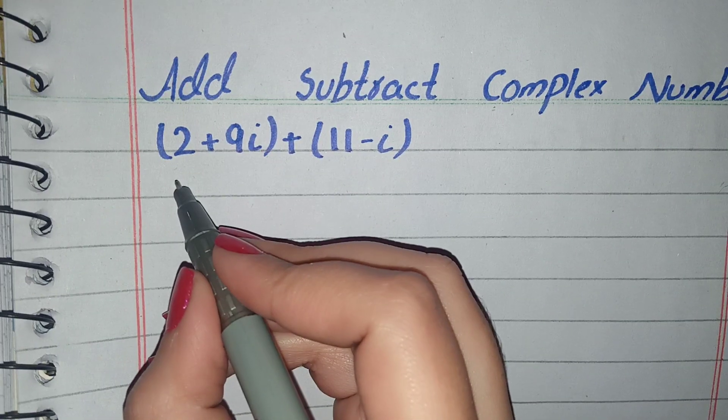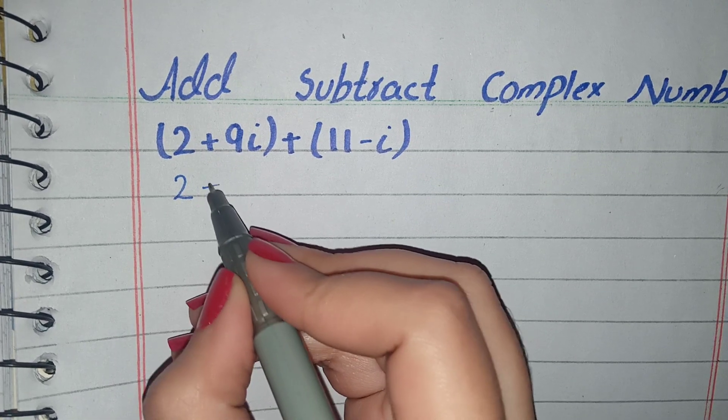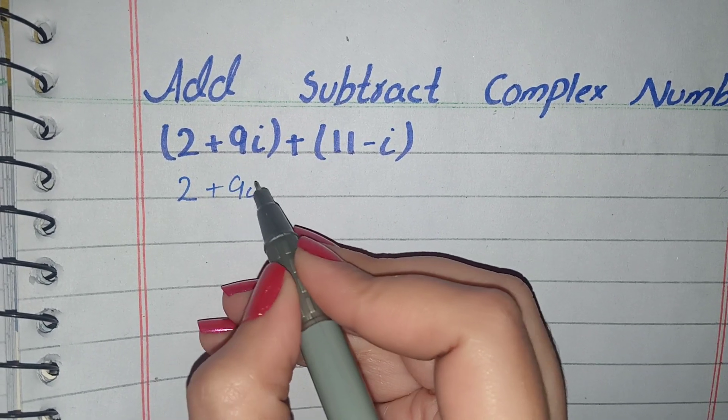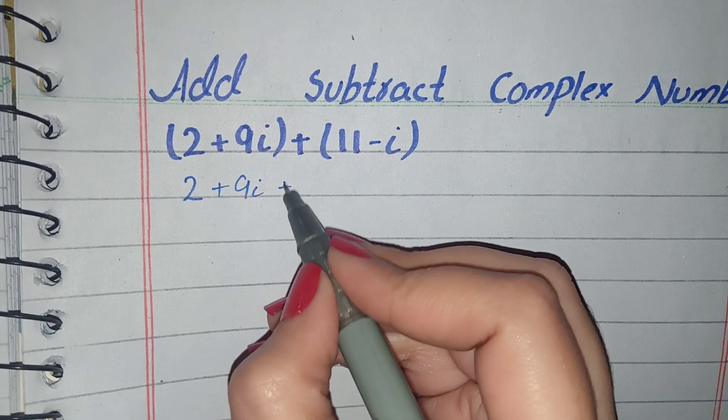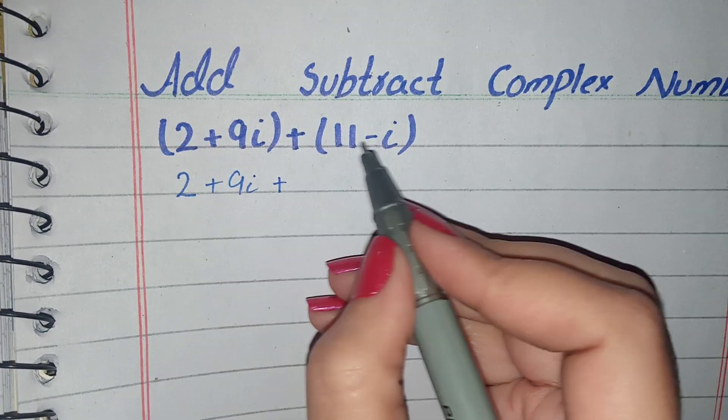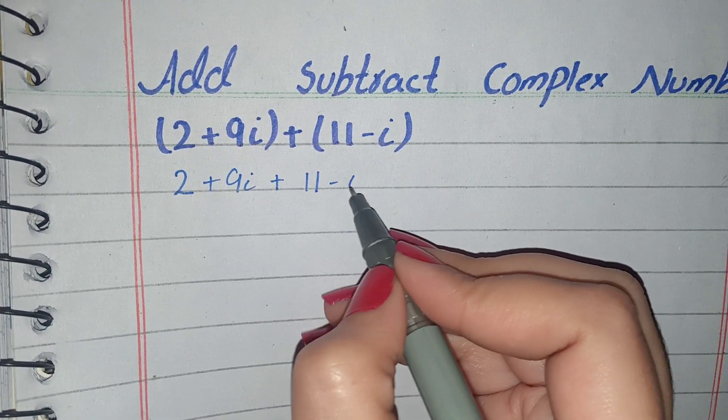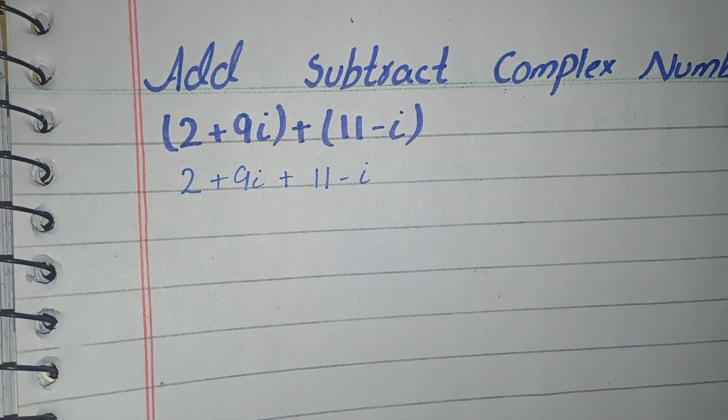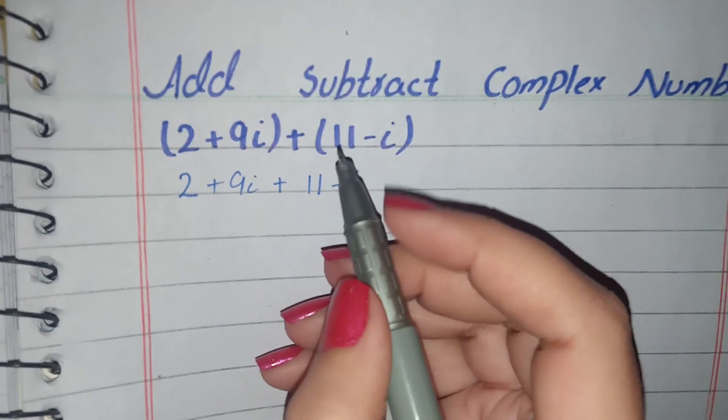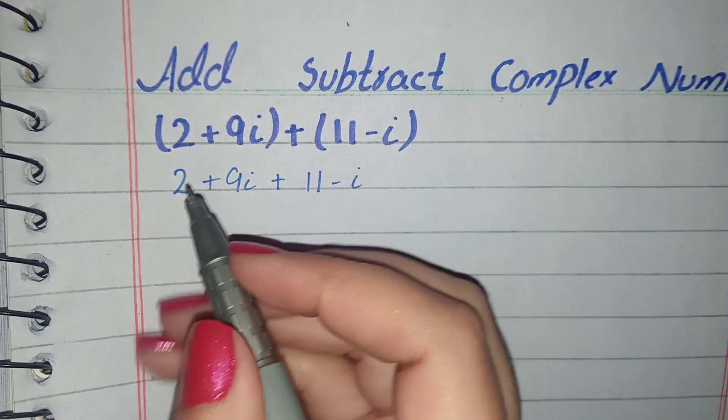Between two brackets we have a positive sign, so in this step we will open brackets. There is a positive sign so inside the bracket there will be no change of sign. We will write 11 minus i.